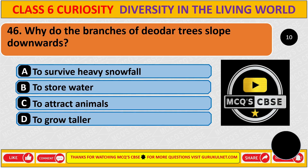Why do branches of conifer trees slope downward? The correct answer is A: to survive heavy snowfall.